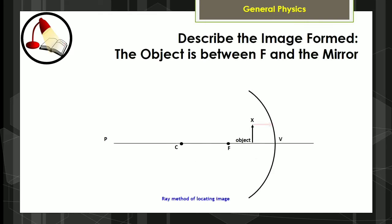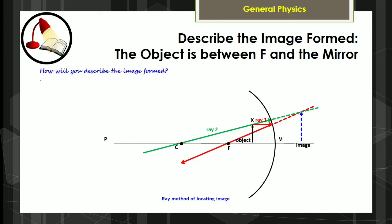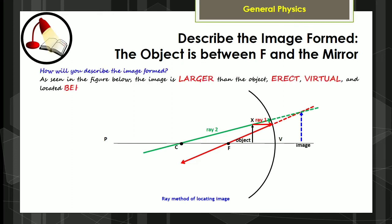For another example, let us describe the image formed if the object is between the focus F and the vertex V of the mirror. As seen in the figure below, the image is larger than the object, erect, virtual, and located behind the mirror.